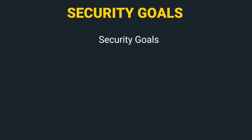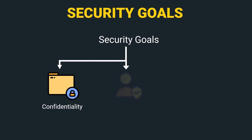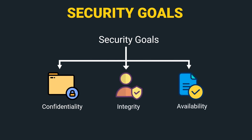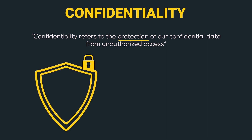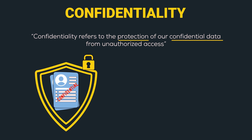The three standard security goals are confidentiality, integrity, and availability. Starting with confidentiality — confidentiality refers to the protection of confidential data from unauthorized access. Your confidential data is any information that is not intended for the general public. This data can be any company's trade secrets, sensitive data, or any data intended for only some authorized individuals or groups.